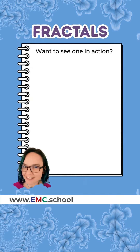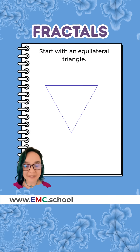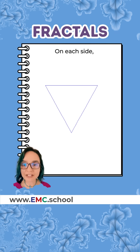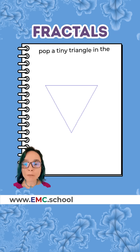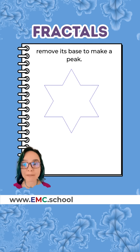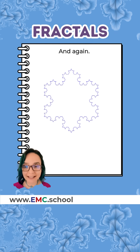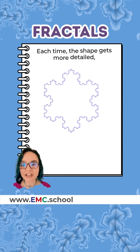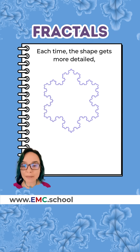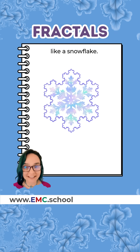Want to see one in action? Start with an equilateral triangle. On each side, pop a tiny triangle in the middle and remove its base to make a peak. Do the same on every side again and again — each time the shape gets more detailed, like a snowflake.